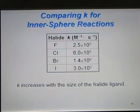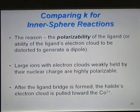Now, you can also compare the rate constant for inner sphere mechanisms based upon the different types of halides. Notice that as the size of the halide increases, the rate constant increases, meaning that the bigger the bridging halide ligand, the faster the reaction occurs. Here's the reason. The reason that the bigger halide ligands lead to faster reactions is polarizability.